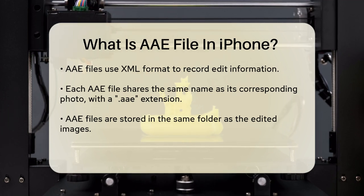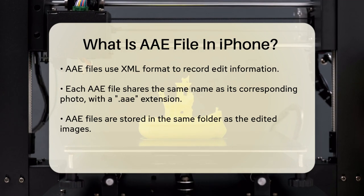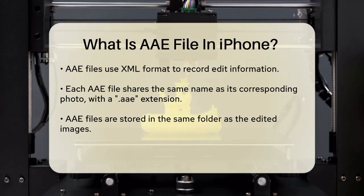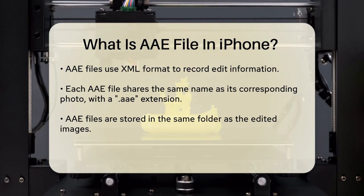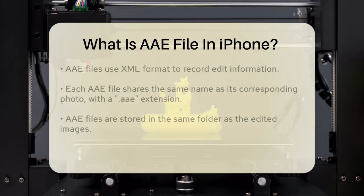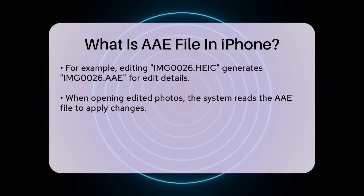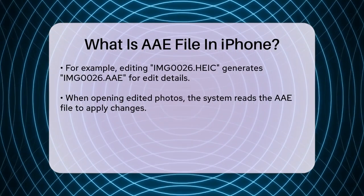For example, if you have a photo named img026.heic and you edit it, there will be a corresponding img0226.aae file that contains all the edit information. When you open the edited photo on your iPhone or Mac, the system reads the AAE file and applies the edits automatically.